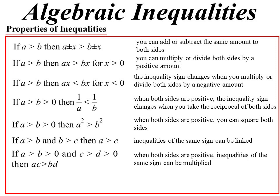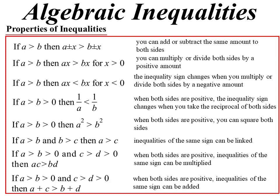Now if A is greater than B and C is greater than D, you can multiply them together — as long as they're positives, of course, because multiplying by a negative will change the sign. You can multiply inequalities together, and you can also add the inequalities together. So if A is greater than B and C is greater than D, then A plus C is greater than B plus D.